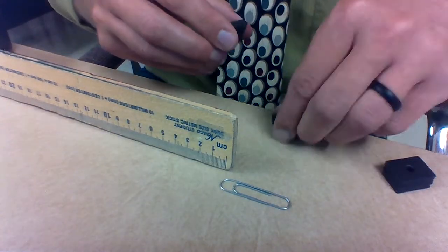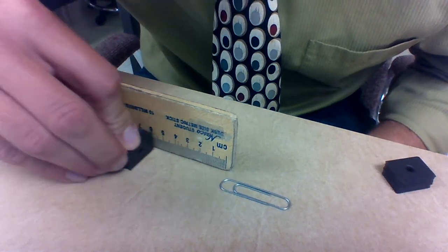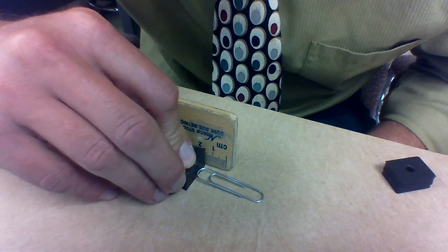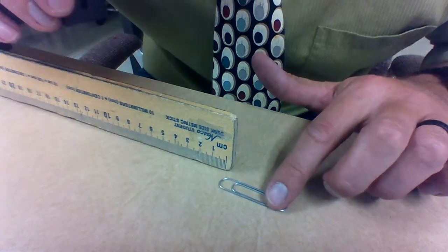Two magnets is 1.5 centimeters, so that's 1.5 centimeters.